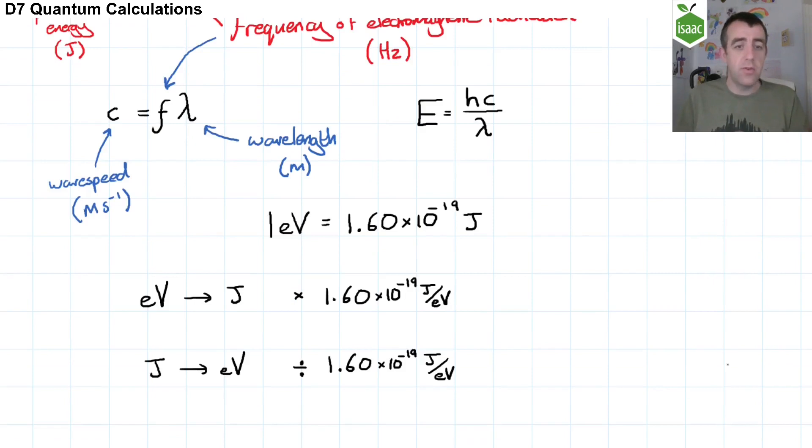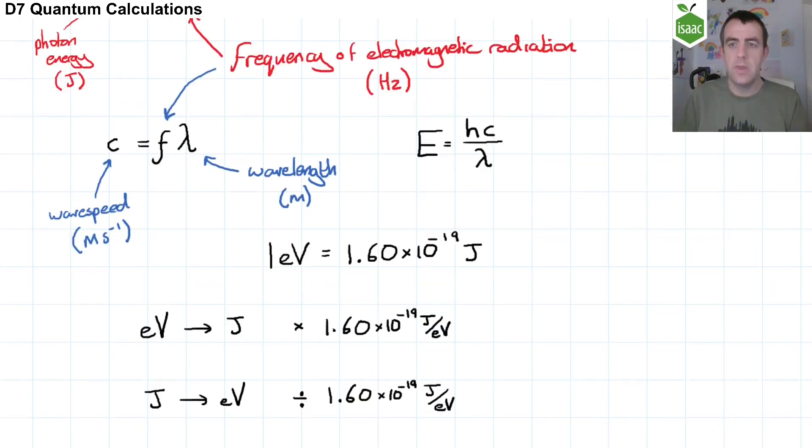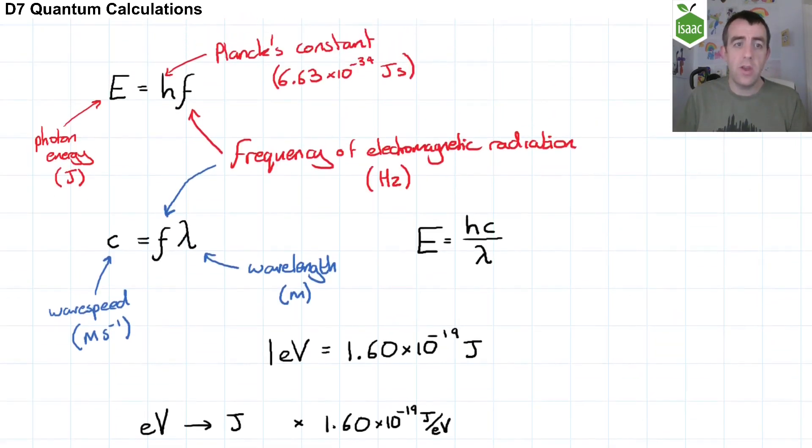To convert from electron volts to joules, you multiply your energy by 1.60 times 10 to the negative 19 joules per electron volt. And to convert your energy in the other direction, you divide by that number. Importantly, the equations that we have looked at at the start of this video, the energy is measured in joules, not electron volts.